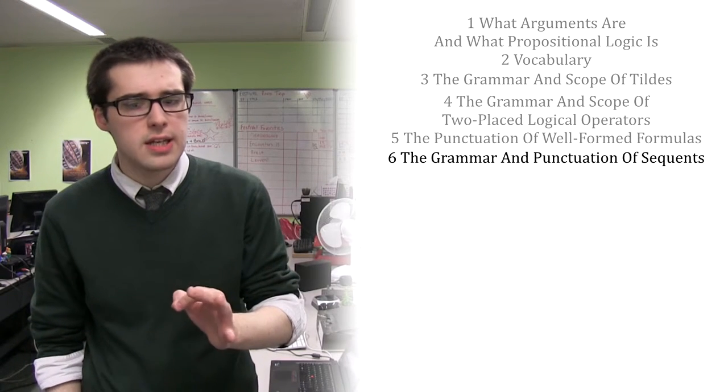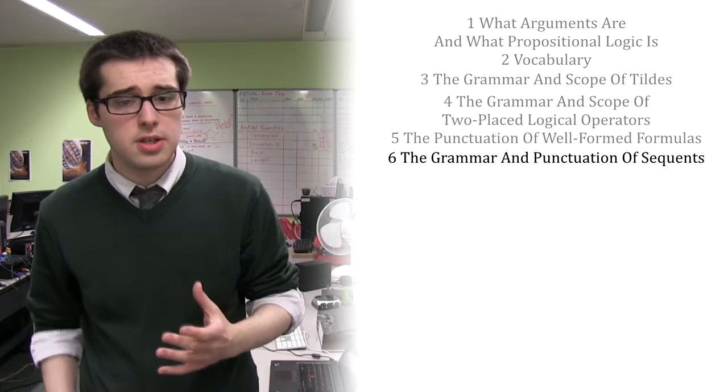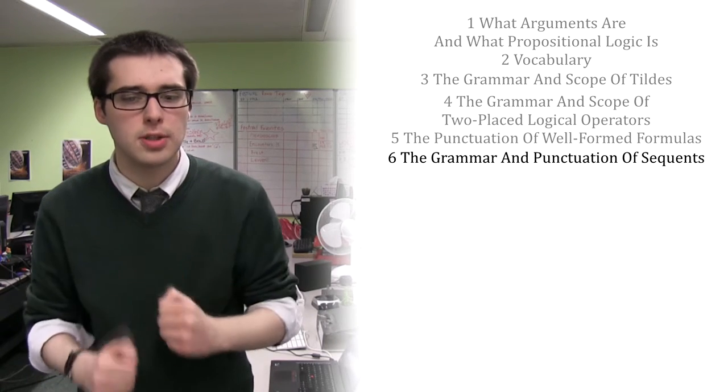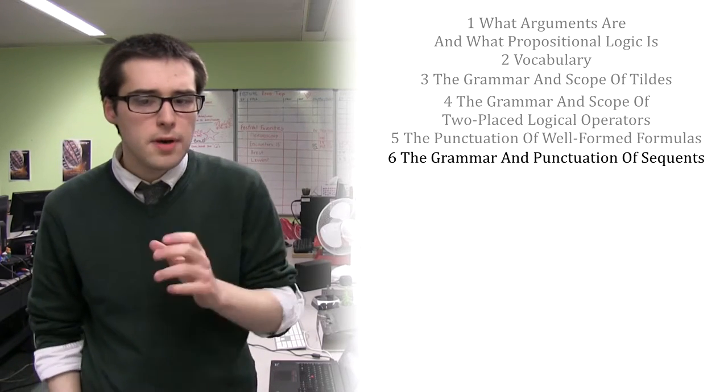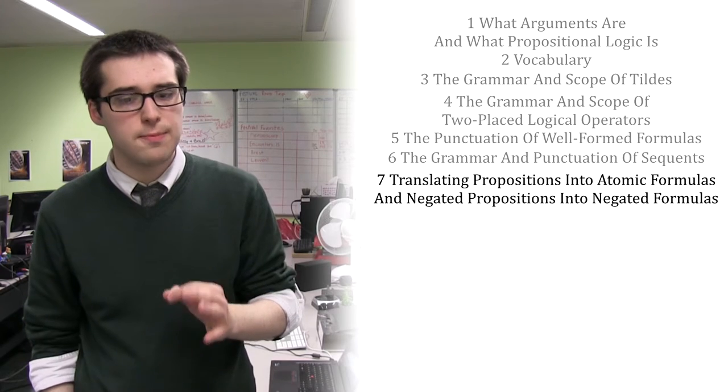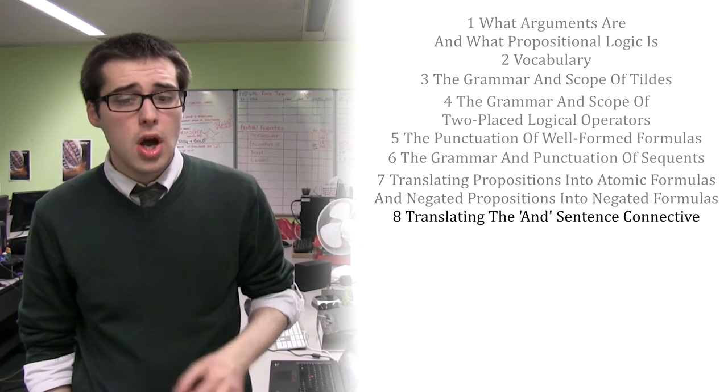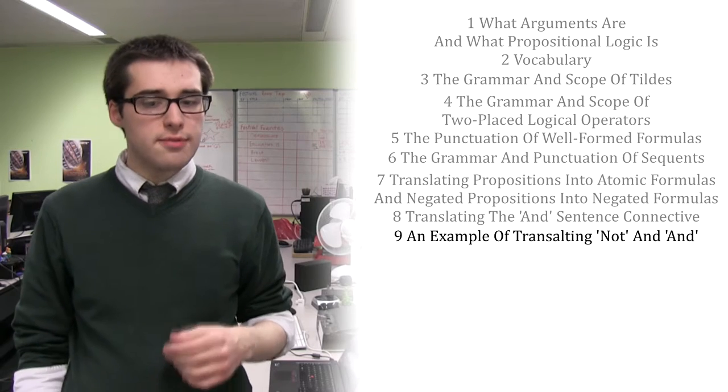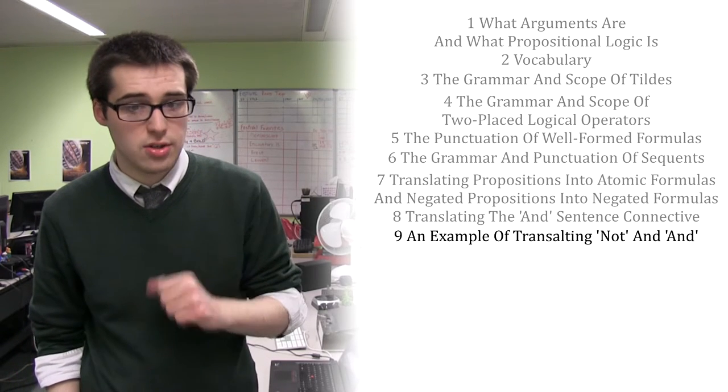We were then ready to look at how to translate from natural language into beautiful formal language. We first looked at translating negated propositions, then at conjoined propositions, followed by an example of translating negation and conjunction.